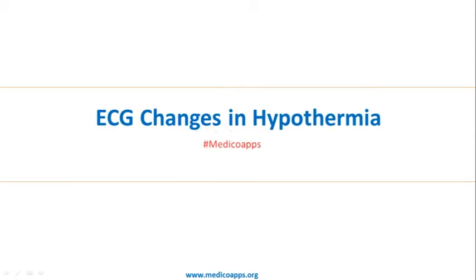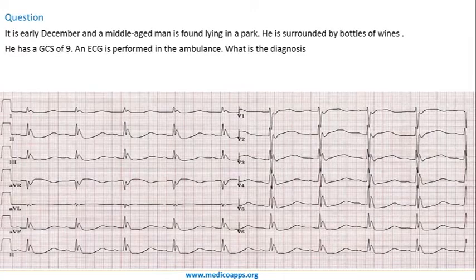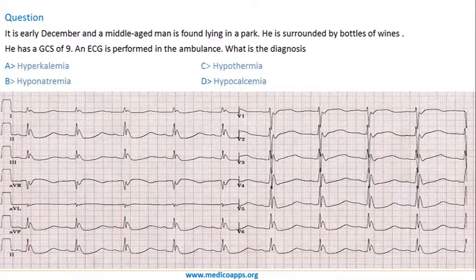This year, one of the questions asked in ECG was changes in hypothermia. The question was asked in early December: a middle-aged man found lying in the park, surrounded by bottles of wine, has a GCS of 9, and an ECG is performed in the ambulance. What is the diagnosis?